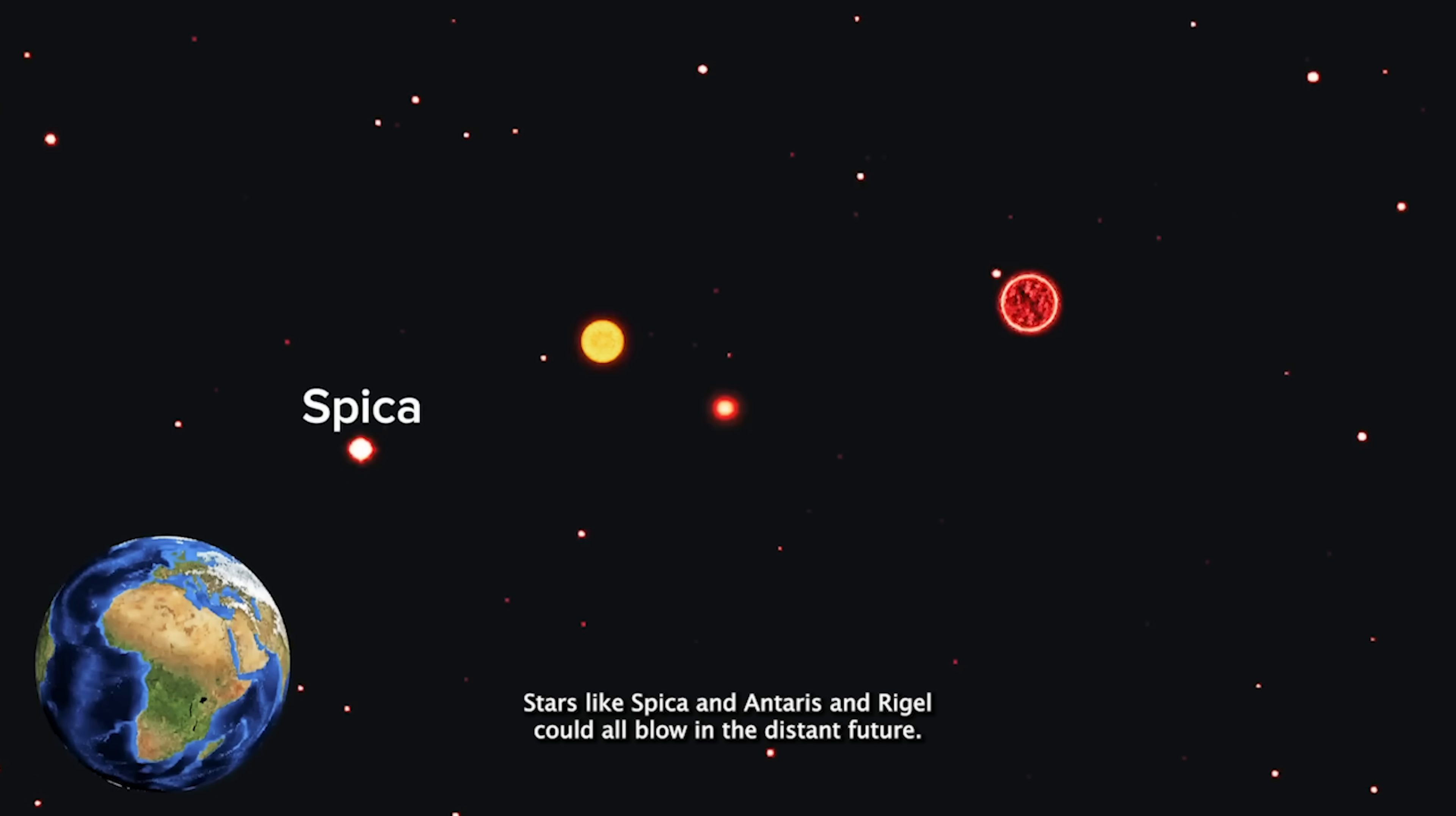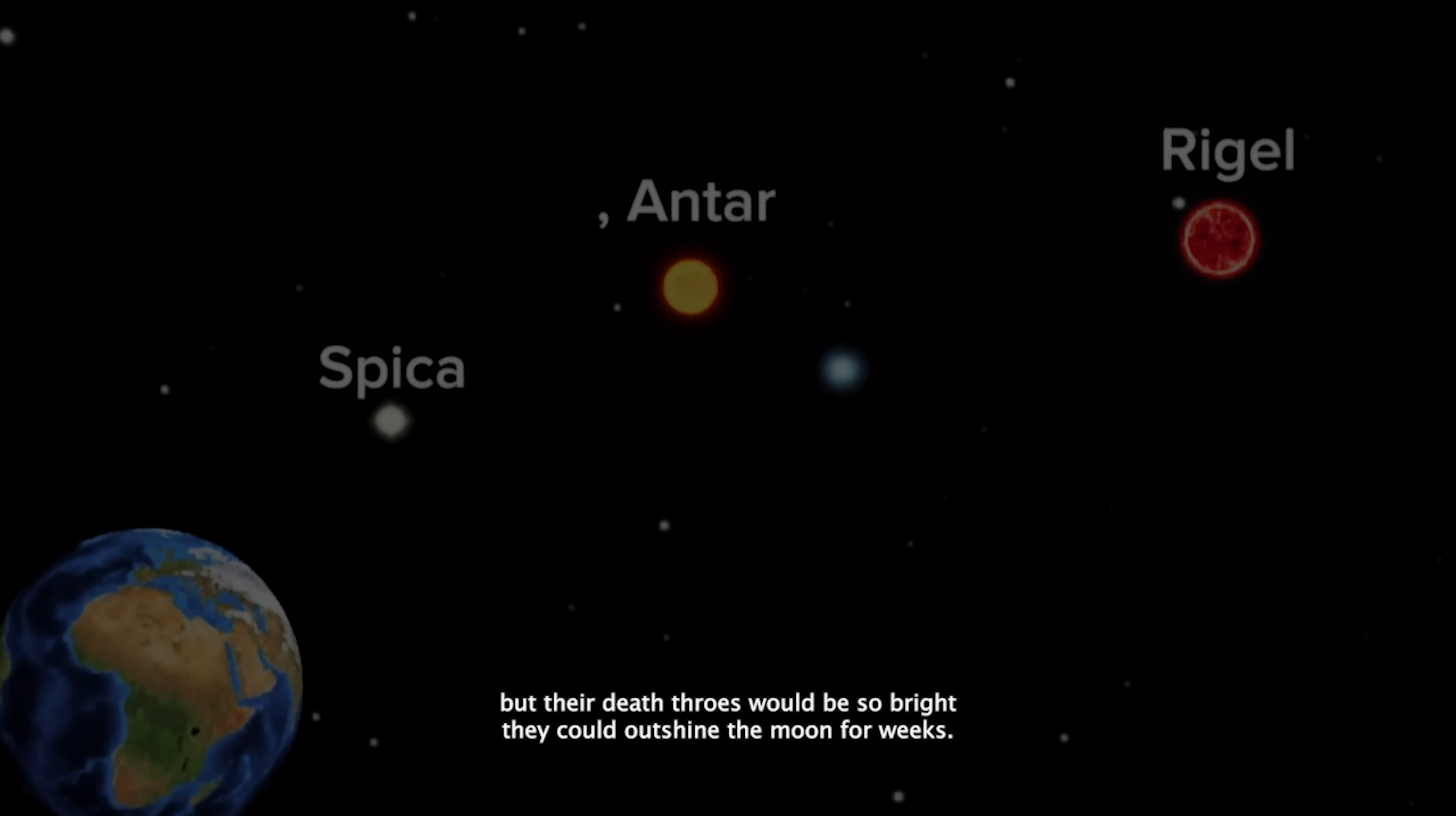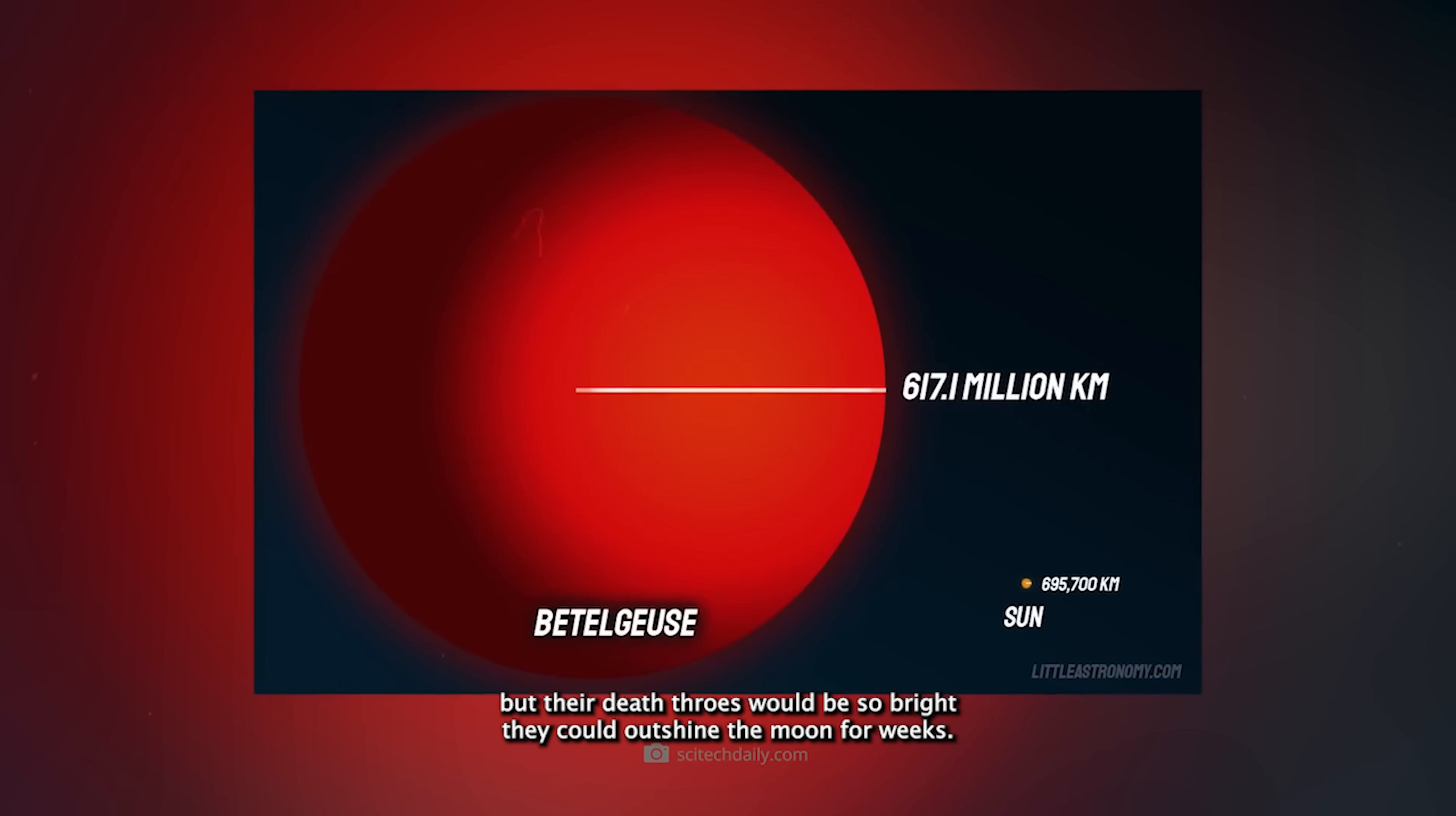Stars like Spica, Antares, and Rigel could all blow in the distant future. They're hundreds of light years away, so Earth wouldn't be fried, but their death throes would be so bright they could outshine the moon for weeks.